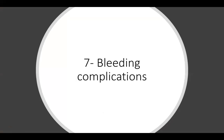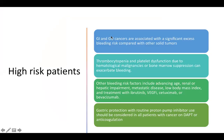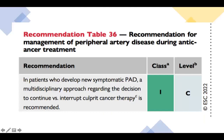Regarding bleeding complications: GI and genitourinary cancers carry increased bleeding risk. Thrombocytopenia further elevates this risk, and drugs like VEGF inhibitors and bevacizumab also increase it. Importantly, gastric protection with proton pump inhibitors should never be forgotten in cancer patients using DAPT or anticoagulation. For peripheral arterial disease, a multidisciplinary approach regarding whether to continue or interrupt the cancer therapy is recommended, with no specific guideline recommendations available.